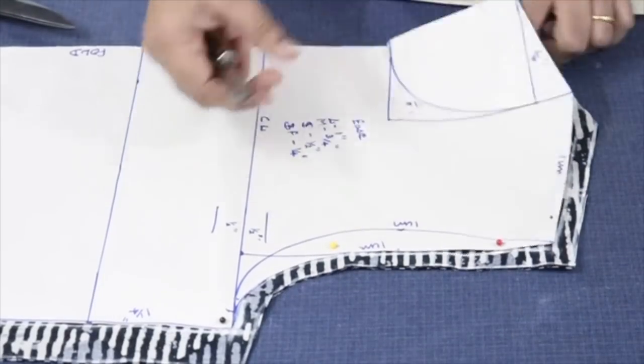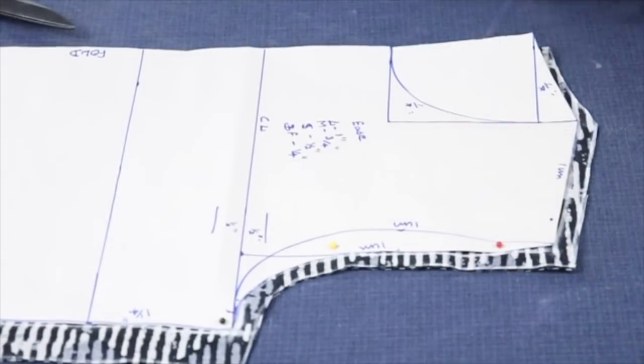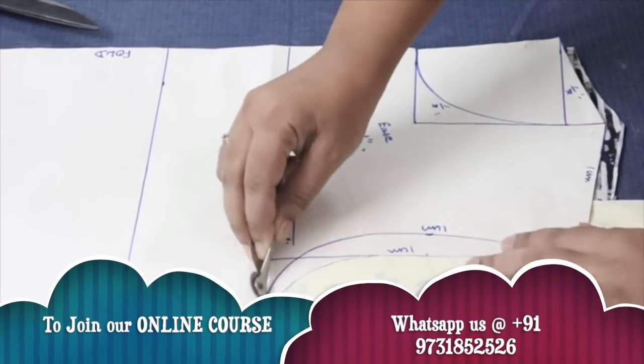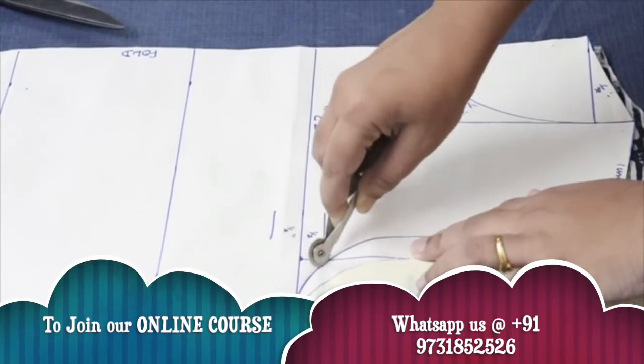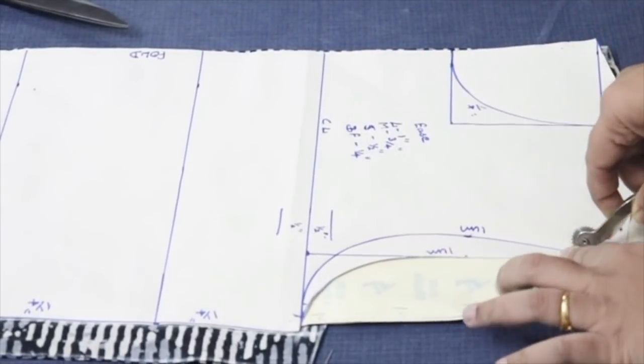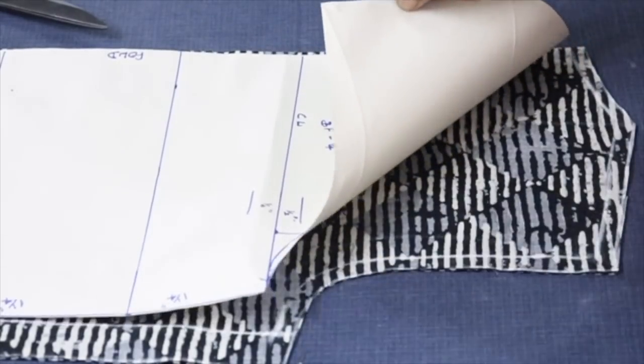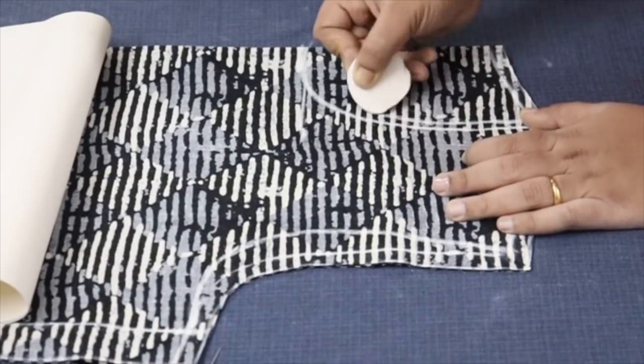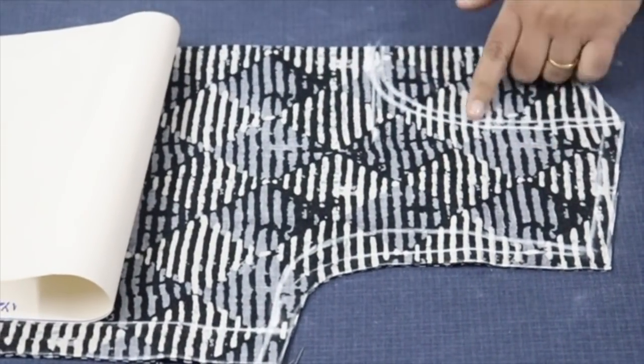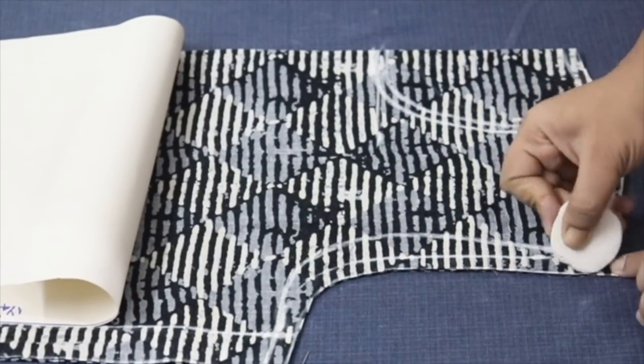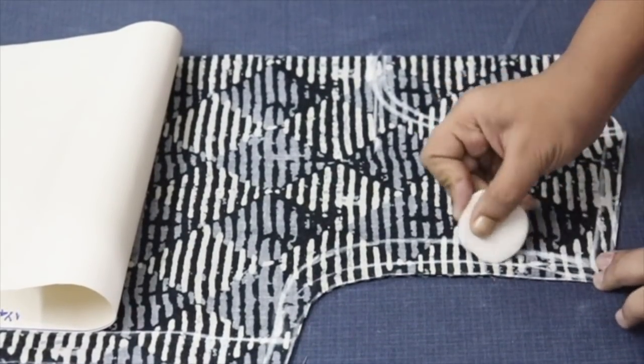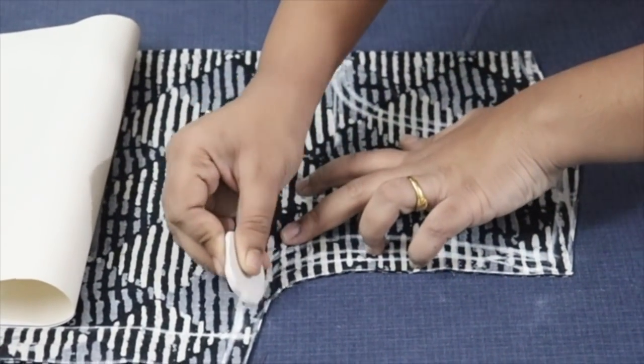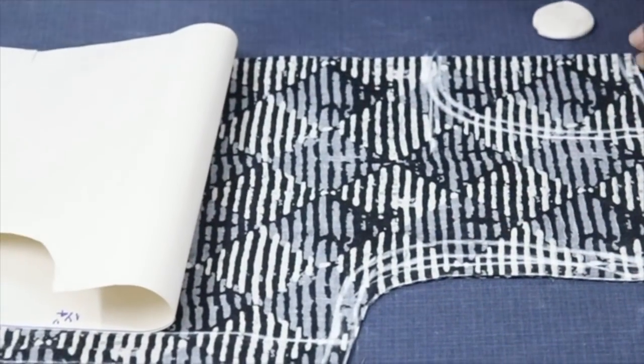Now trace the neck. So front neck I have traced. And same way trace the front arm also. So giving the seam allowance for the front neck. Same way give seam allowance for the front arm also.